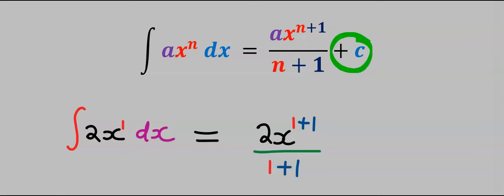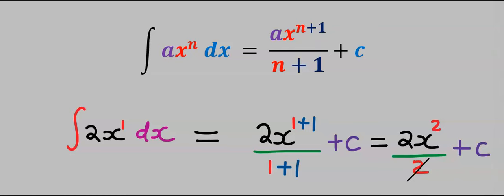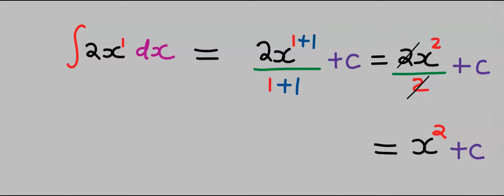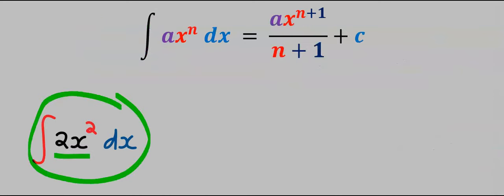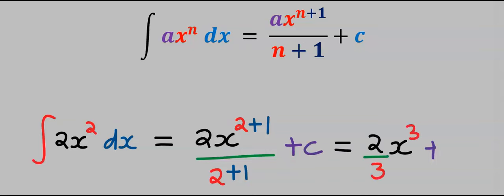We are then going to add C to our result. The two values cancel out, and this is our result. You can see that the integral symbol and the dx are just symbolic instructions. Let's also integrate 2x squared — if you solve correctly according to the formula, this is our answer.